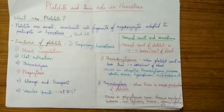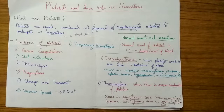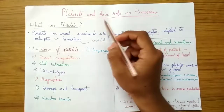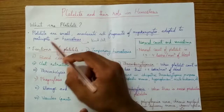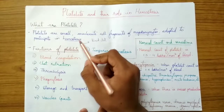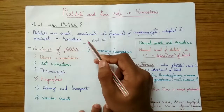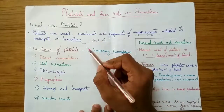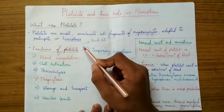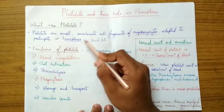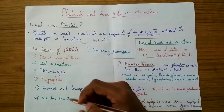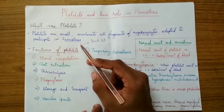Hello, my name is Kirtan and welcome to my channel Physiology at Once. In this channel I'll be uploading many physiology videos which are easy to understand and you can replicate the same in a board examination. Today's topic is platelets and their role in hemostasis. Platelets are small anucleate cell fragments of megakaryocytes adapted to participate in hemostasis. Hemostasis is the formation of a blood clot, divided into temporary hemostasis and definitive hemostasis.